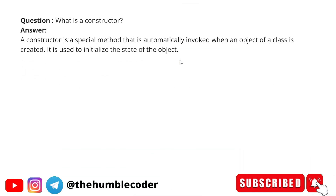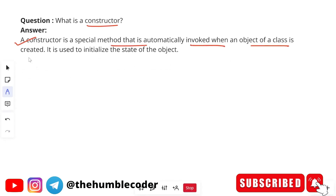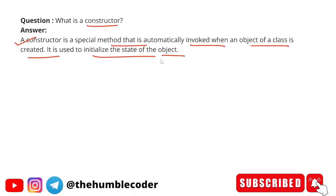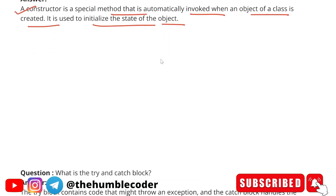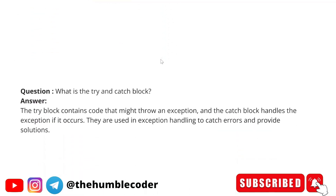Next question: What is a constructor? A constructor is a special method that is automatically invoked when an object of a class is created. It is used to initialize the state of an object. As we all know, it is automatically invoked when the object of the class is created and it has the same name as the class.